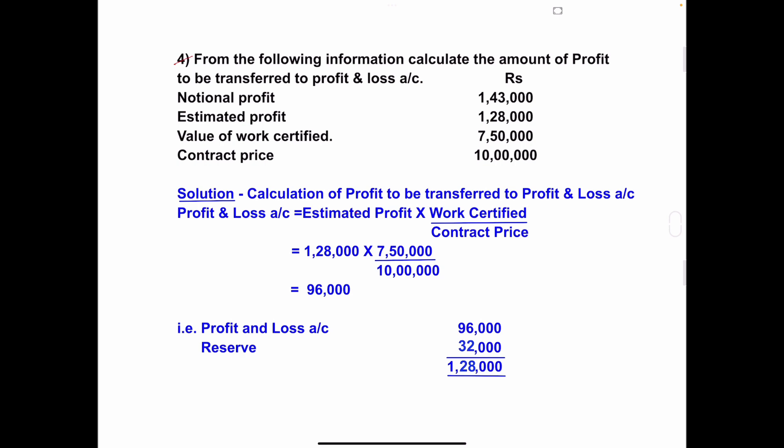Notional profit: 1,43,000. Estimated profit: 1,28,000. Value of work certified: 7,50,000. Contract price: 10,000.